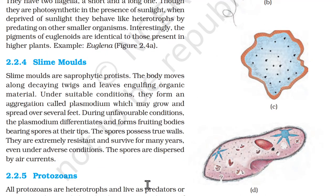2.2.4 Slime Molds. Slime molds are saprophytic protists. The body moves along decaying twigs and leaves, engulfing organic material. Under suitable conditions, they form an aggregation called plasmodium, which may grow and spread over several feet. During unfavorable conditions, the plasmodium differentiates and forms fruiting bodies bearing spores at their tips. The spores possess two walls, are extremely resistant, and survive for many years even under adverse conditions. The spores are dispersed by air currents.